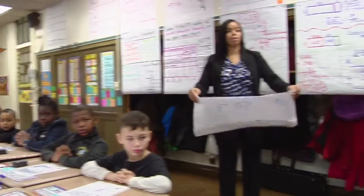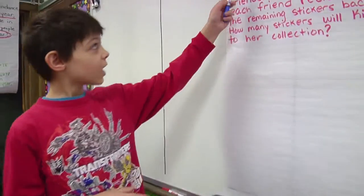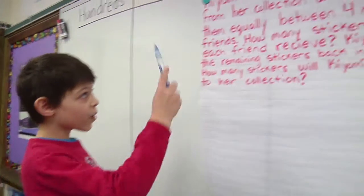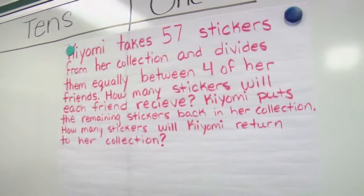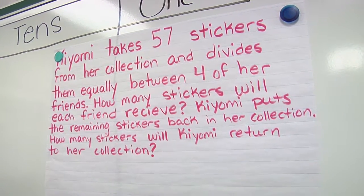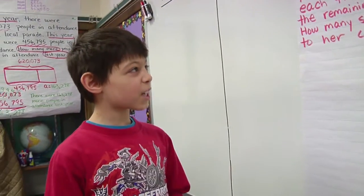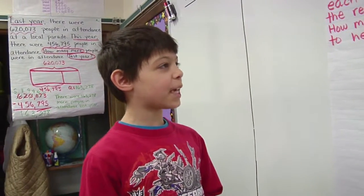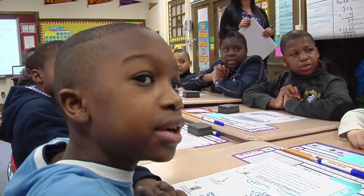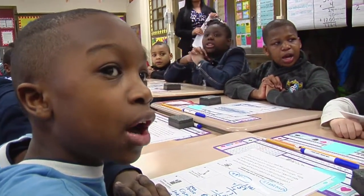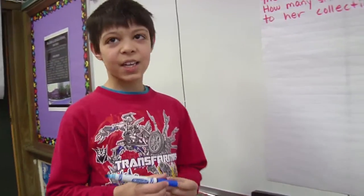So read the problem with me, scholars. Kiyomi takes 57 stickers from her collection and divides them equally between four of her friends. How many stickers will each friend receive? Kiyomi puts the remaining stickers back in her collection. How many stickers will each friend return to her collection?